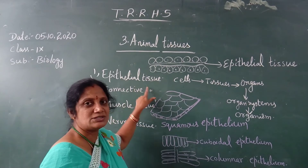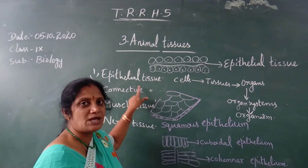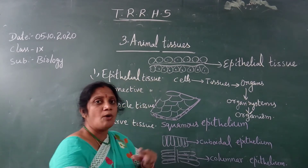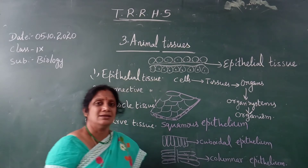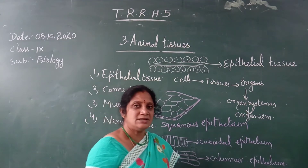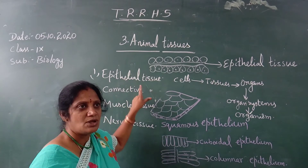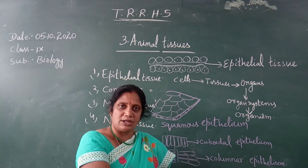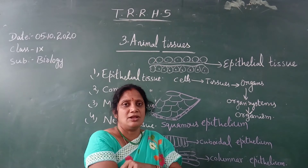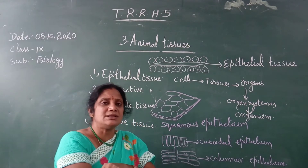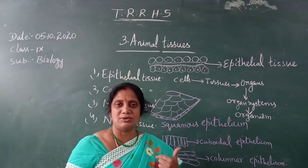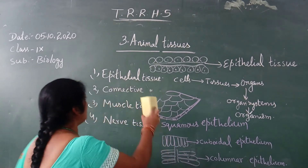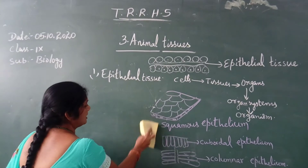First we will discuss the epithelial tissue. 'Epi' means outer. So the main function of epithelial tissue is that it forms the outer lining of cells and organisms. For example, our skin is the largest epithelial tissue in our body.